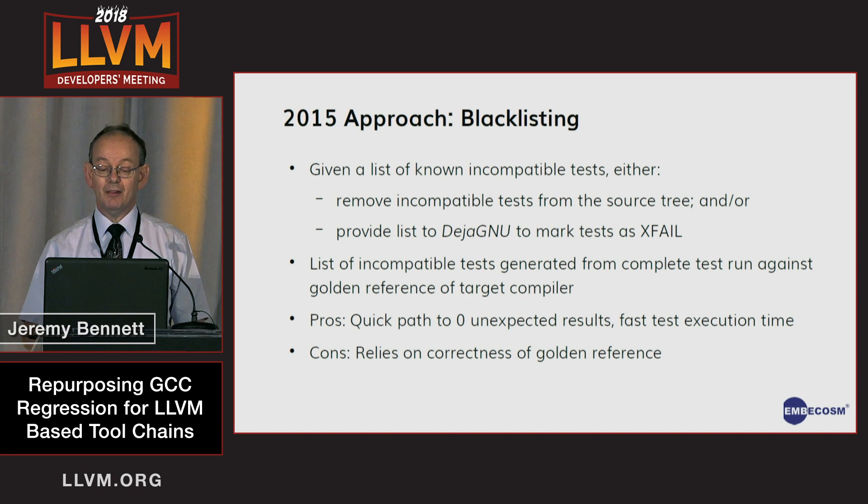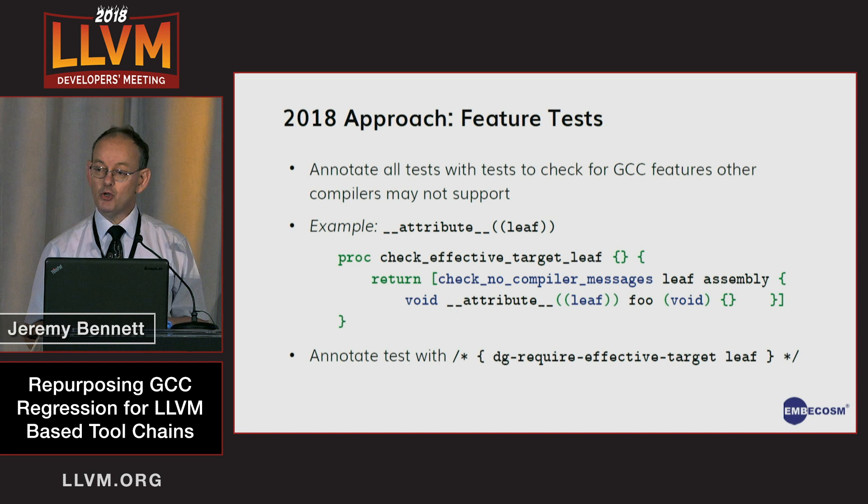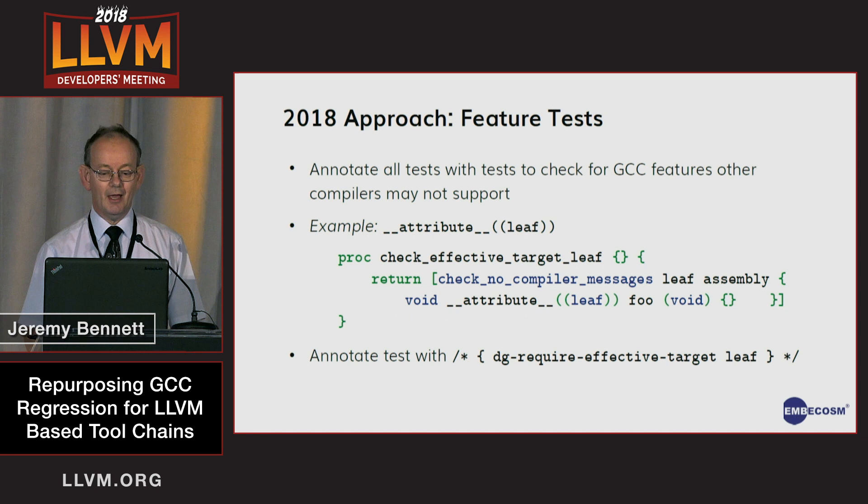Blacklisting is not really scalable, and we quickly threw that away. The approach we've used is the same approach used in excluding tests generically in the GCC tests, which is to not run a test if the feature it relies on isn't there. For example, you don't try running ARM-specific tests on a MIPS target. And that's quite easily done.